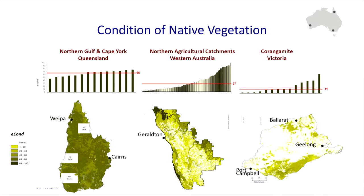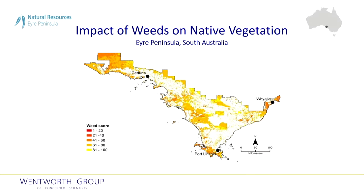This figure shows the next level of detail. Each bar represents the condition of individual vegetation types in three distinctly different regions across Australia. As you'll see below each of those bar charts, this data can also be spatially referenced. The accounts hold even more detail: one of the indicators of native vegetation condition in the Eyre Peninsula is weeds. This figure uses data in the accounts to show where in the landscape weeds are having the greatest impact on the condition of that asset — the darker the colour, the greater the impact.